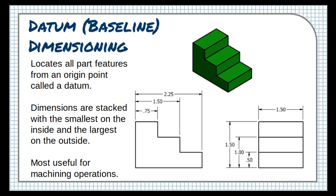Another dimensioning style that's different from chain dimensioning is called datum dimensioning, also called baseline dimensioning. In datum dimensioning, all of the part features are sized and located from a single point on the object, usually a bottom corner, called a datum.